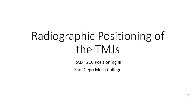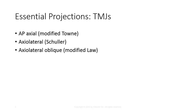In this presentation, we're going to be taking a look at the radiographic positioning of the temporomandibular joints. The essential projections for the TMJs include the AP axial or modified Towns view, the axial lateral oblique or modified Law, and the axial lateral view or Schuller.